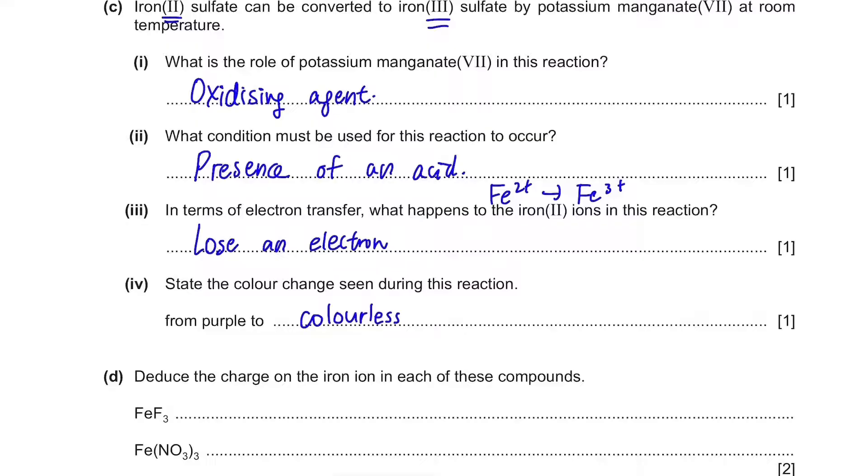Part D, deduce the charge on the iron ion in each of these compounds. So the thing with transition elements is that they can have multiple charges. So we cannot be sure whether it's Fe2+, or Fe3+, or Fe4+. So when we have FeF3, one thing we know is that the charge of fluorine is minus 1. So if fluorine needs to have 3 of itself to be a compound with iron, it means that the negative 1 charge is times 3. So it becomes minus 3. So the charge of iron should be plus 3 to even out this negative charge. So the answer is plus 3.